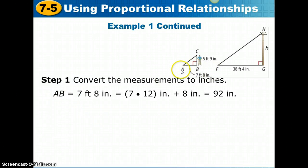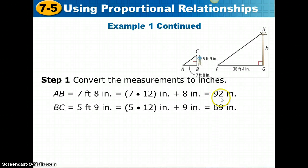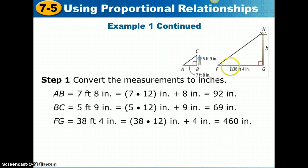It's easier to convert everything to just inches so we don't deal with decimals. Our first step is to make that conversion. AB, Tyler's shadow, 7 feet 8 inches. We're going to take 7 times 12, 12 inches in a foot, and then add 8. So Tyler's shadow measures 92 inches. BC, Tyler's own height, 5 feet 9 inches. 5 times 12 plus 9 inches gives us 69 inches. And then we're going to also convert the shadow length for the pole. 38 feet 4 inches becomes 460 inches.